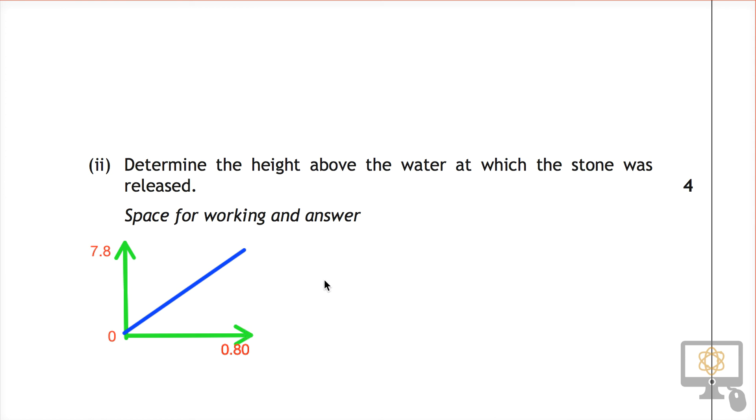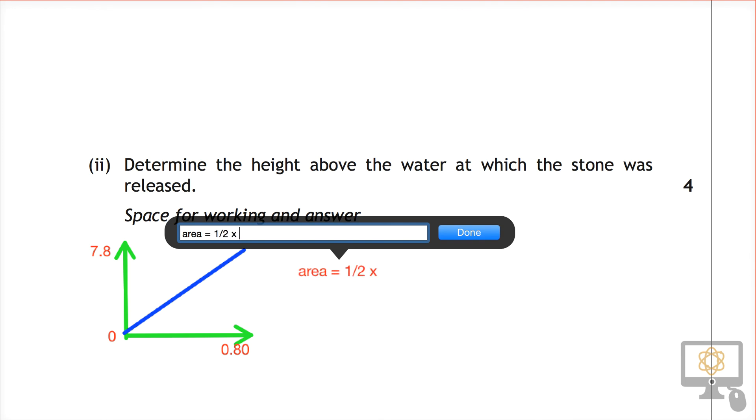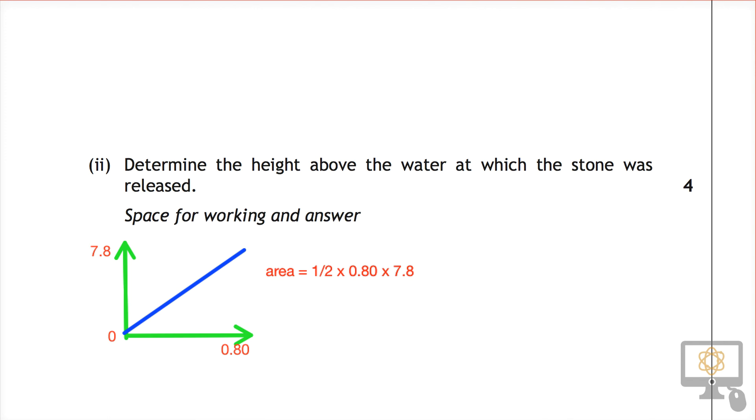and if we think about what we know about speed-time graphs, the area under a speed-time graph represents the distance traveled. And so this area would be equal to half of the base times the height of 0.80, times the height of 7.8.